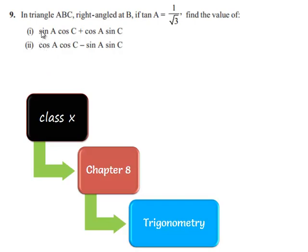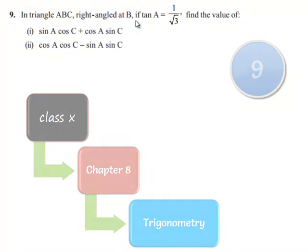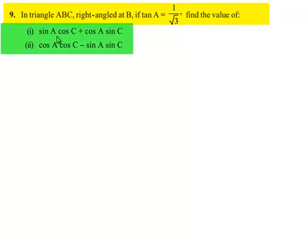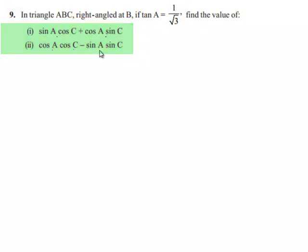Moving on to question number 9. In triangle ABC, right angle at B, if tan A is equal to 1 by root 3, find the value of: (i) sin A cos C plus cos A sin C, and (ii) cos A cos C minus sin A sin C.